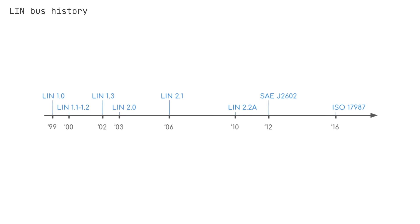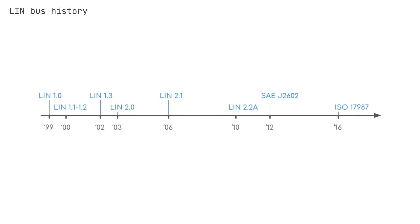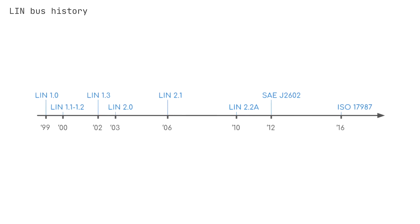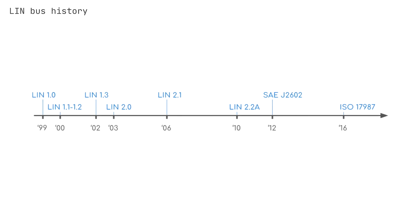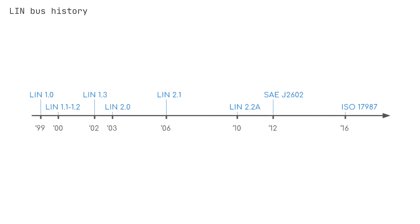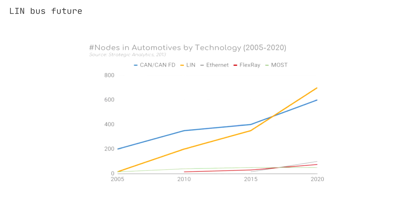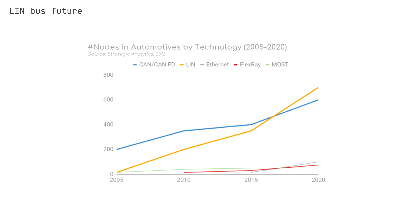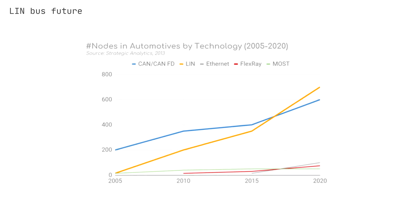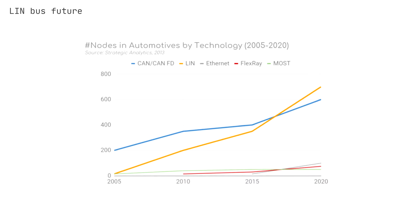In 2006, LIN 2.1 was released, while in 2010, LIN 2.2a was released, a version that is now widely implemented. Further, in 2010–2012, SAE standardized LIN as SAE J2602, based on LIN 2.0. In 2016, CiA standardized LIN as ISO 17987:2016. LIN bus has exploded in popularity in the last decade, with 700 million nodes expected in automotives by 2020 vs 200 million in 2010.